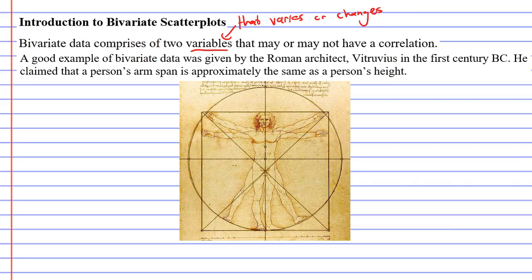He claimed that a person's arm span is approximately the same as a person's height. So what we're saying is that a person's arm span has a correlation to a person's height. In this particular example, our variables are our arm span and our height.